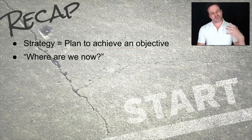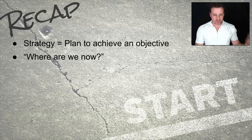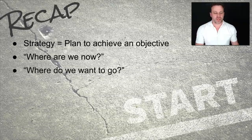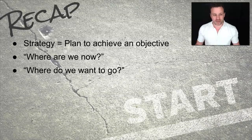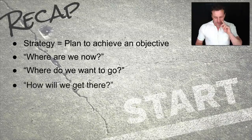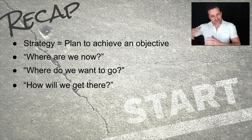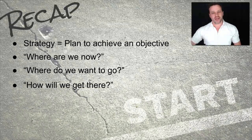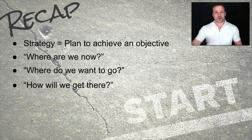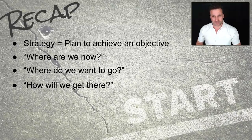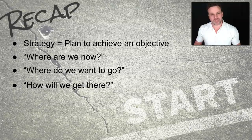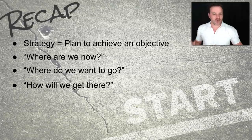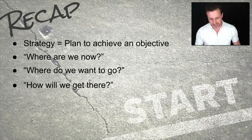It starts with the question: where are we now? Telling the truth about the present situation. Then you say, where do we want to go? And of course you have lots of choice about that. And then the main part of the strategy is how will we get there — how will we get to that point where we want to go starting from here? That obviously contains what channels we're going to use to reach people and everything else. We're going to break all of that down in later sessions.